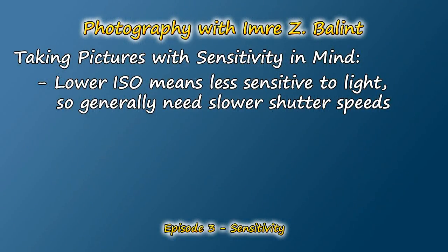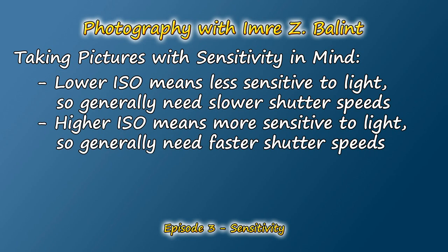Now let's look at how sensitivity ties into photography. This is where sensitivity, shutter speed, and aperture start to come together. If you have your camera set to a lower ISO setting, your camera sensor will be less sensitive to light, so you're going to need a longer exposure time — in other words, your shutter speed will need to be slower. If you're set to a higher ISO like 800 or 1600, your camera will be very sensitive to light, so you can use a faster shutter speed.